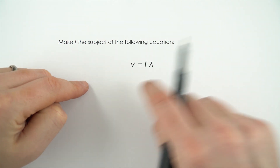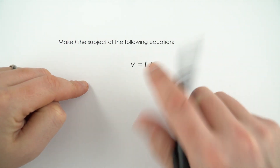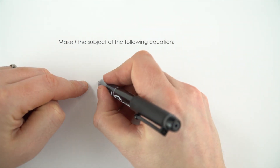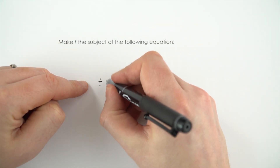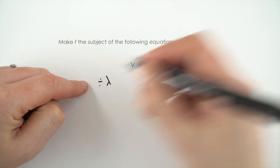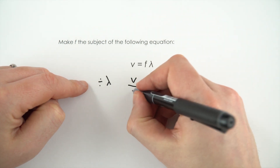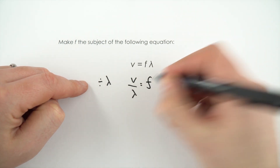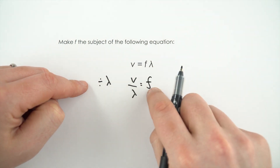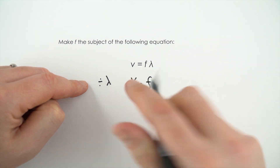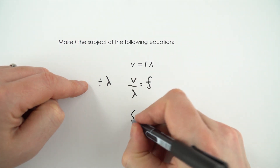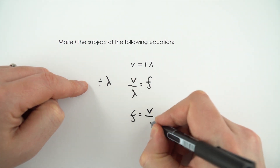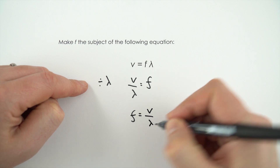We're going to do the same to the left and the right. We want to make this the subject, so the first thing I'm going to do is divide both sides by lambda, to say that V divided by lambda is equal to F, and then I just swap the two sides over to say that the frequency, F, is equal to V divided by lambda.